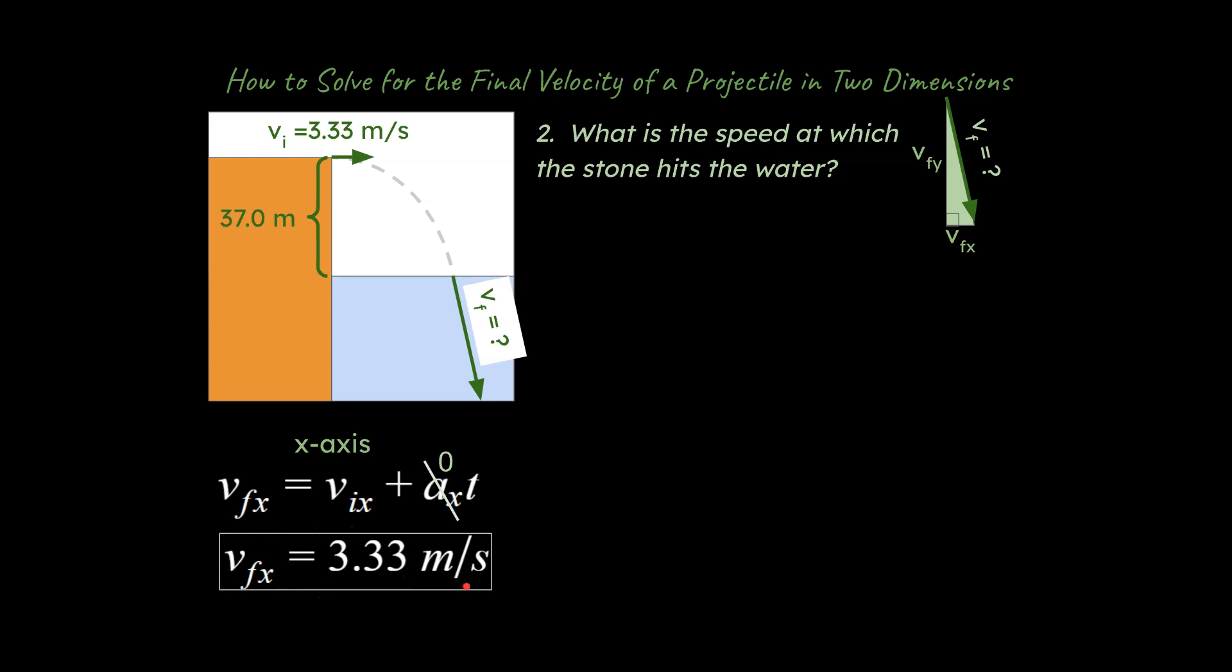We were already given our v initial in the x, so we're going to go ahead and just write down our v final in the x is the same as our v initial in the x. Then what we're going to do is use the same equation and work it in the y-axis. So now we can think about, again, is there anything that is zero in this equation? So what do you think? Well the answer is yes, there is something that's zero, and that's our v initial in the y.